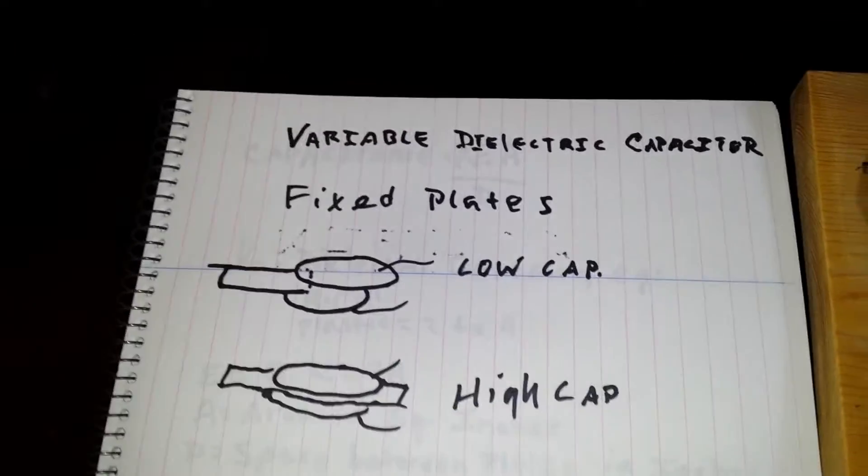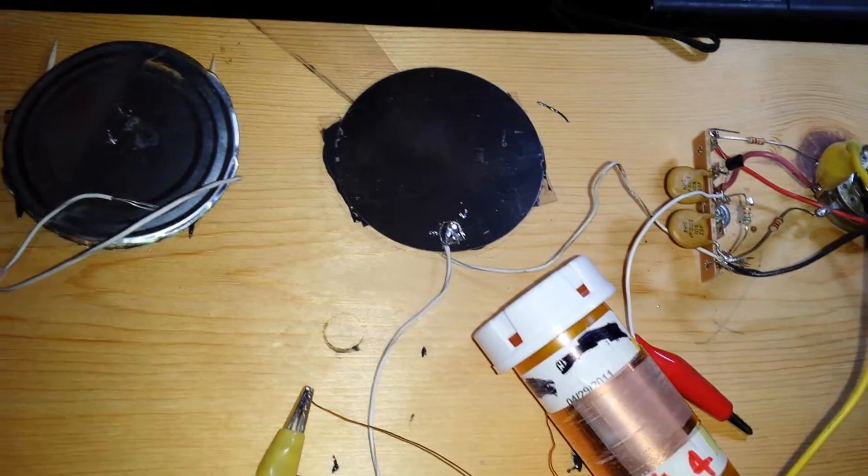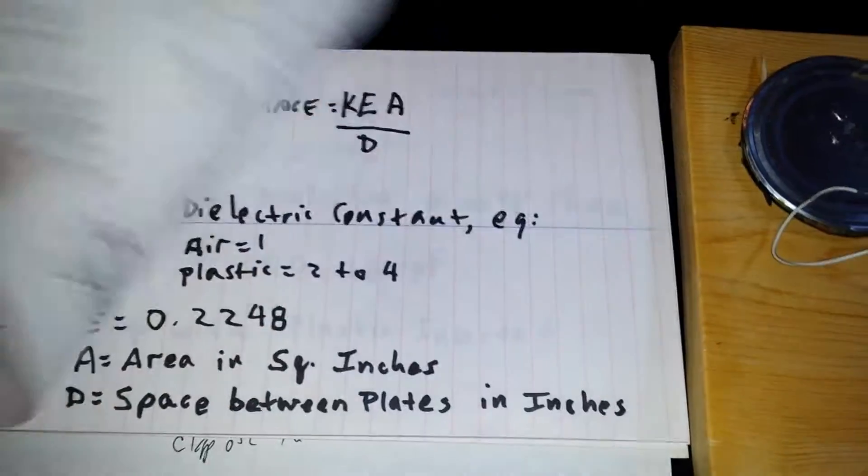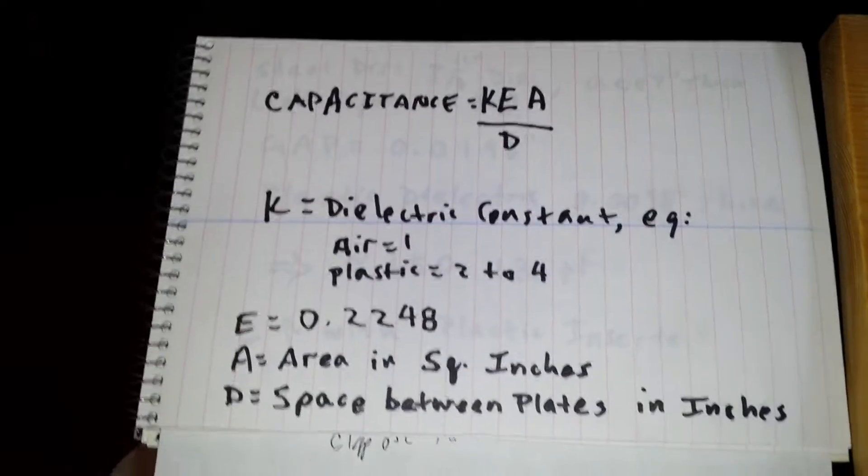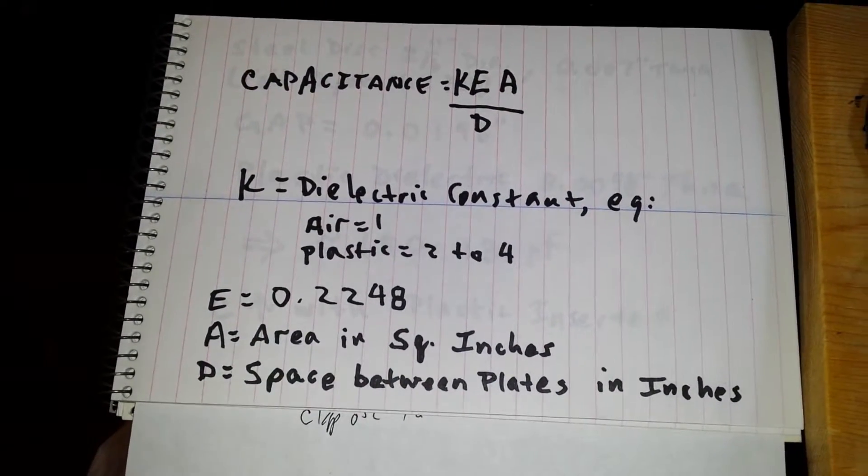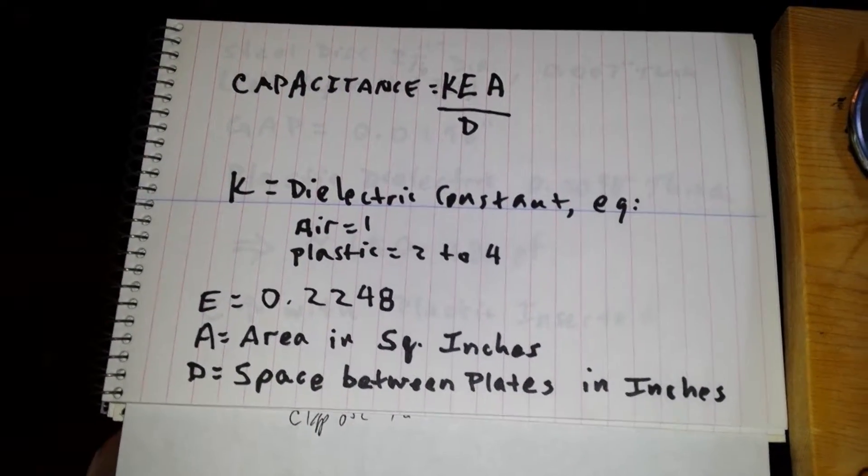Two fixed-plates. That's high-capacity, low-capacity. In English values, in inches generates picofarads. This is the dielectric.